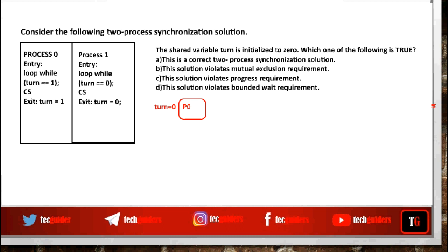When turn equals 0, p0 can enter the critical section. As long as it is inside the critical section, turn remains 0. So even if p1 wishes to enter, it cannot. Similarly, when turn equals 1, p1 can enter the critical section. As long as p1 is inside, turn value is 1, so even if p0 tries to enter, it cannot. So there is mutual exclusion.